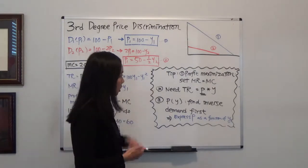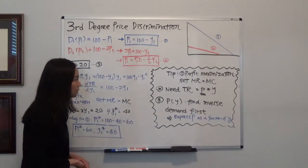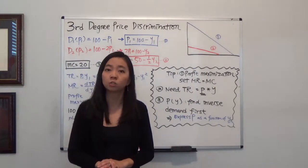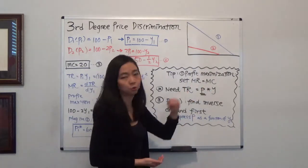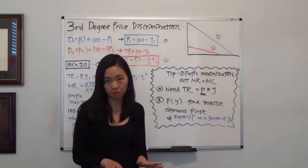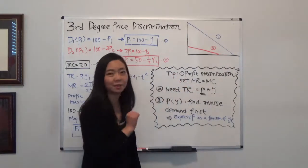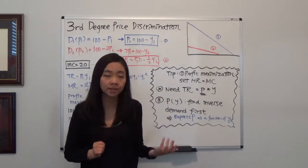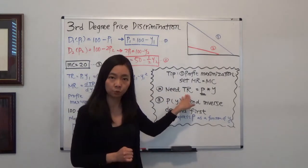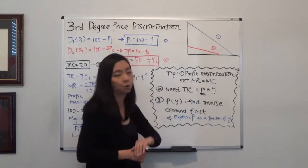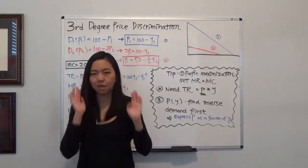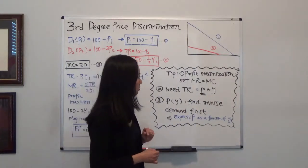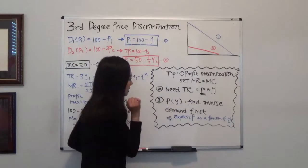I want to share the tip behind all these equations. For profit maximization, a monopoly sets marginal revenue equal to marginal cost. Marginal cost is given. To find marginal revenue, we need total revenue, because taking the derivative of total revenue with respect to quantity gives marginal revenue. Total revenue equals price times quantity, so we need to find the inverse demand first.